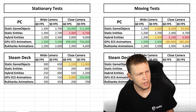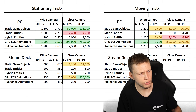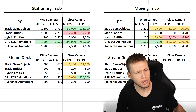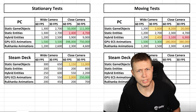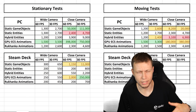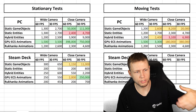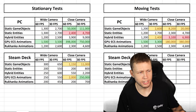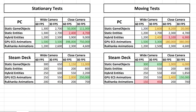GPU ECS animations still shows very high numbers, though not as high as the stationary tests — because when simulating hundreds of thousands of entities with movement, even with parallel threads and the burst compiler, it does have some performance impact. Rukanka animations unfortunately seem limited at the same level as static entities. Steam Deck moving tests show similar patterns to PC moving tests and the previous Steam Deck stationary tests — same trends but with much smaller numbers on the lower-end hardware.